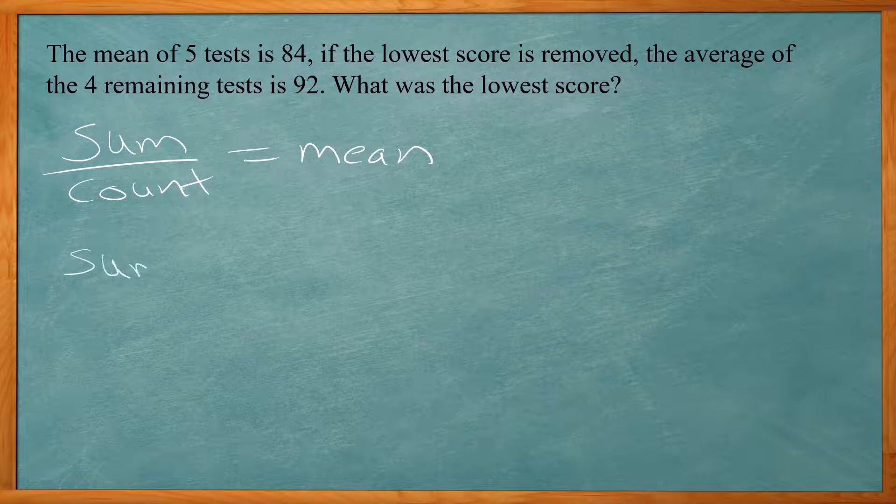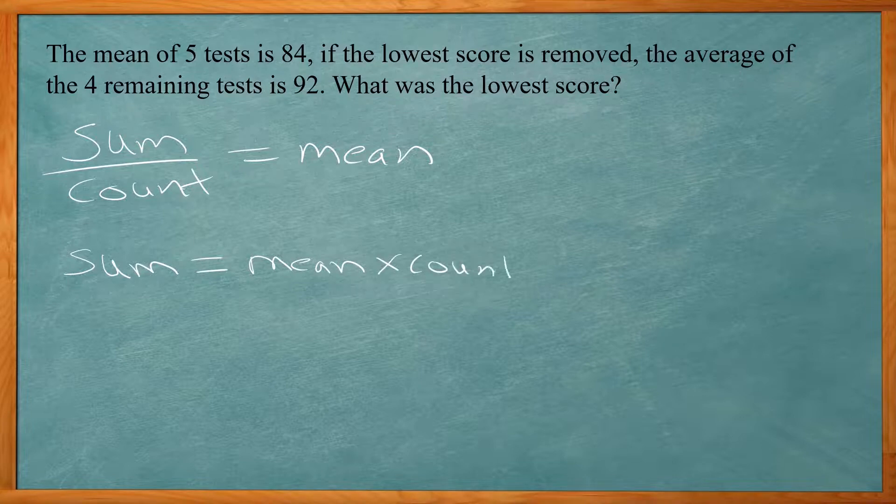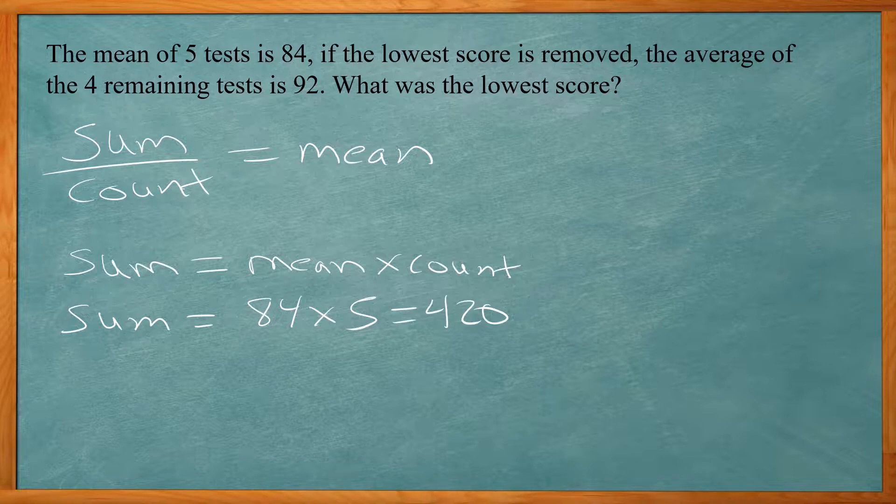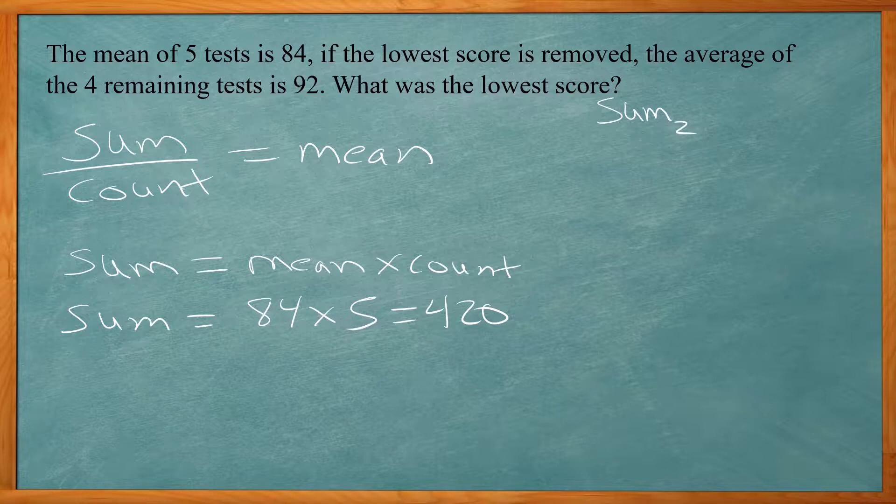Do we have the sum? And actually we do. The sum, if you rewrite this, you have the sum is equal to, multiply both sides by count, equal to the mean times the count. So our sum of all five test scores would be 84 times five. And that comes out to 420. We're removing one score. That's our unknown. Use a variable for that. And then we only have four tests remaining. So we're dividing by four. So we can make a new equation here. We're going to have some other sum. We'll call that sum two divided by four. We have four tests remaining. That's going to be equal to 92.